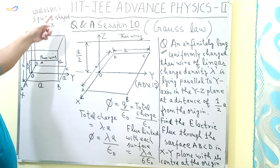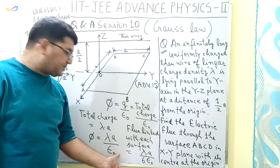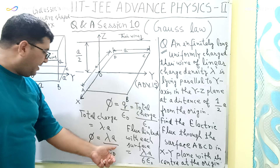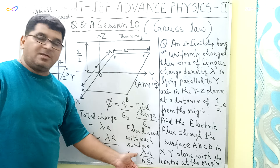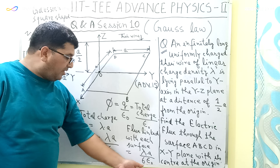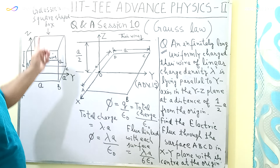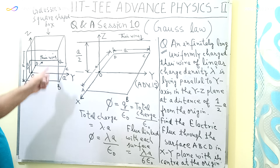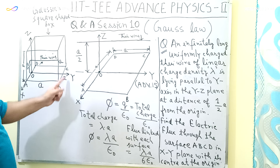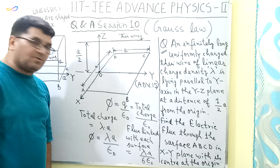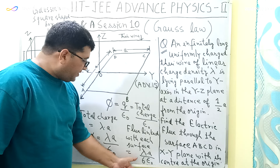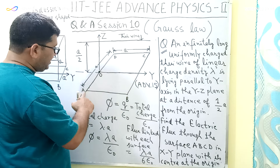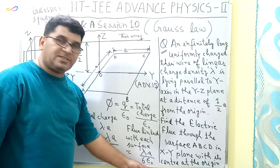There are 6 sides in this Gaussian square-shaped box, and the total flux is lambda·A divided by epsilon naught. The height, length, and width of the box are all equal to A. Therefore, the flux linked with each surface — and specifically with the surface ABCD — will be equal to lambda·A divided by 6·epsilon naught.